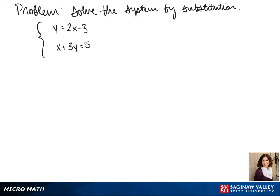Welcome to another day of algebra. Today we'll be solving the system by substitution. The first equation in our system is y equals 2x minus 3 and the second equation is x plus 3y equals 5.